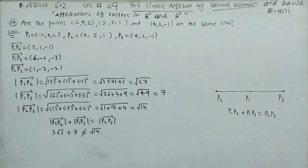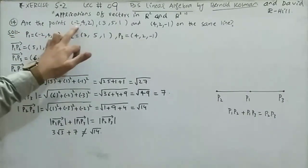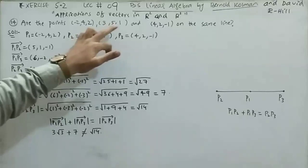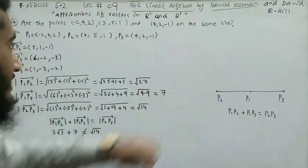Moving to Question 14, which has the same type of statement: are the points (-2, 4, 2), (3, 5, 1) and (4, 2, -1) on the same line?